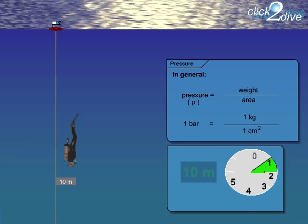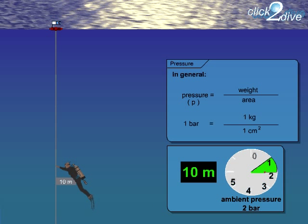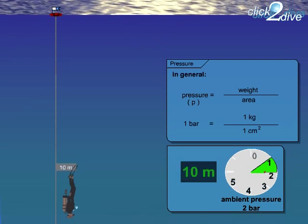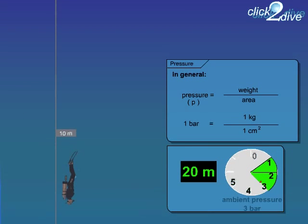When we as divers are at a depth of 10 metres, which corresponds to an additional water pressure of 1 bar, we experience an ambient pressure of 2 bar. If we dive down another 10 metres, the ambient pressure rises to 3 bar.